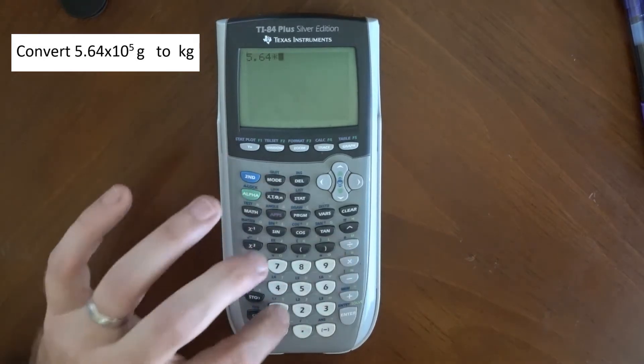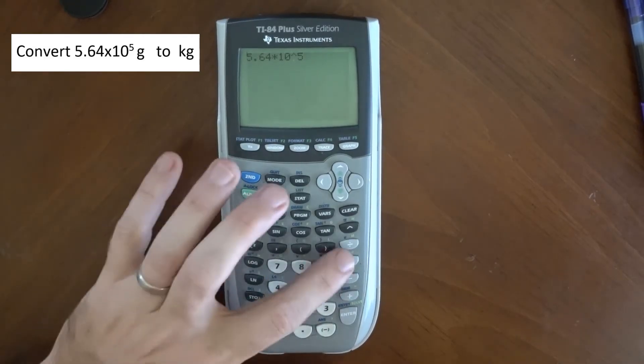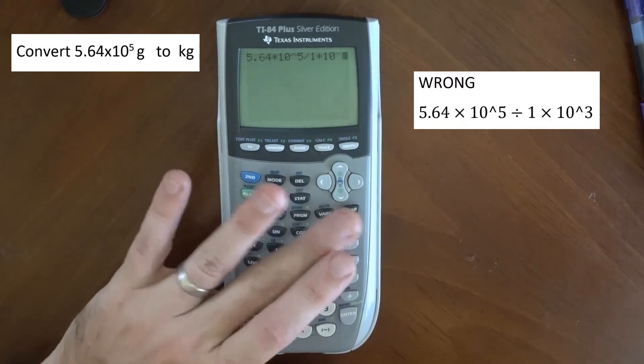This is the wrong way. Times 10 raised to the 5th, like that, and then we're going to divide that by 1 times 10 raised to the 3rd.